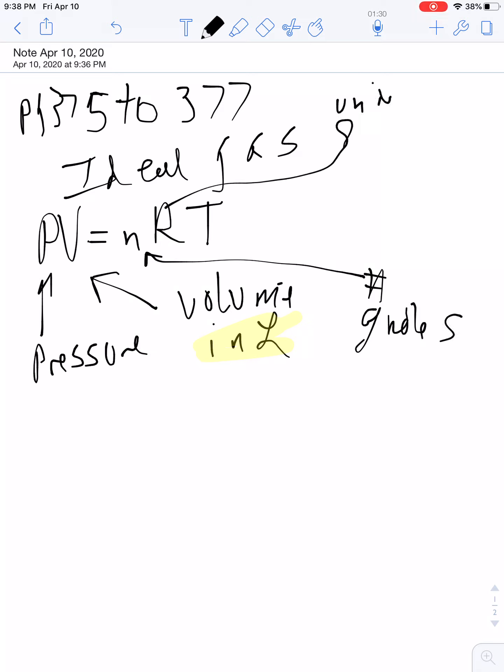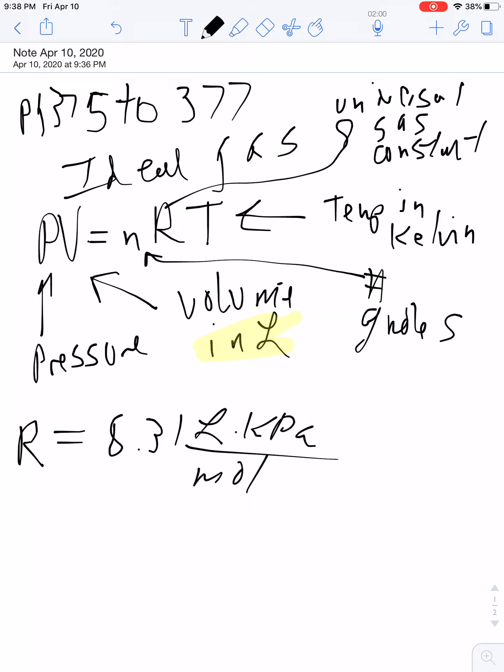R is the universal gas constant, and T is the temperature in Kelvin. Temperature must always be in Kelvin. The universal gas constant is symbolized by the letter R and can come in two forms: 8.31 liters kPa over moles times Kelvin, or 0.0821 liters atmospheres over mole Kelvin.